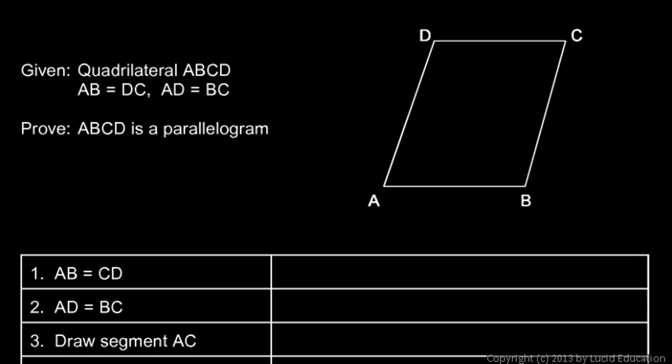Here's the diagram. We're given quadrilateral ABCD, and we're told that AB is equal to DC — those two sides must be the same, so let's mark them the same way. And we're told that AD is equal to BC. Let's mark those two sides the same way as well. From that, we need to prove that it's a parallelogram, so we're going to show that the opposite sides must be parallel.